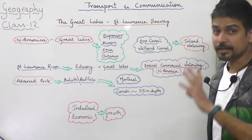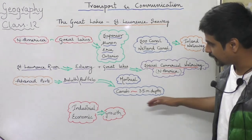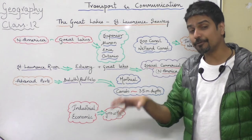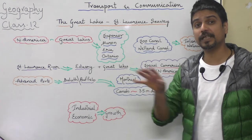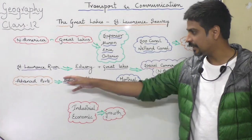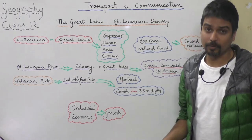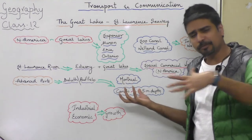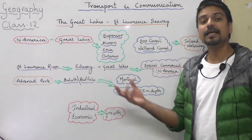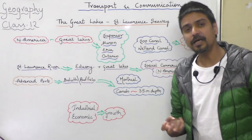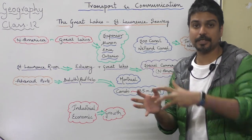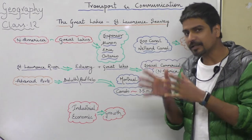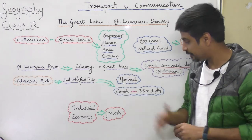Ab mein ya pure continent ki baat kar raha hoon, pure continent ko support kerti hai. Is waterway pe kuch aise advanced ports hai joh ki ocean ports ki tukkar mein aa jate hai, such as Duluth and Buffalo. These are some advanced ocean ports. Vaiset ho ships Montreal tuk jaa sakti hai. Lekin Duluth and Buffalo mein, they have to go ahead and take off their cargo and transfer them into small ships, kyo ki vahan rapids vagira thode se zhaada hai Saint Lawrence river ke.